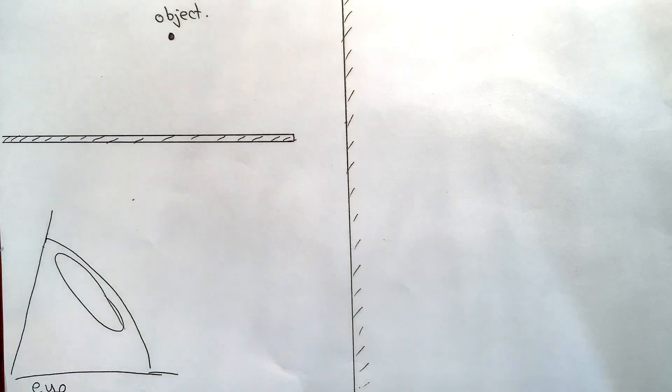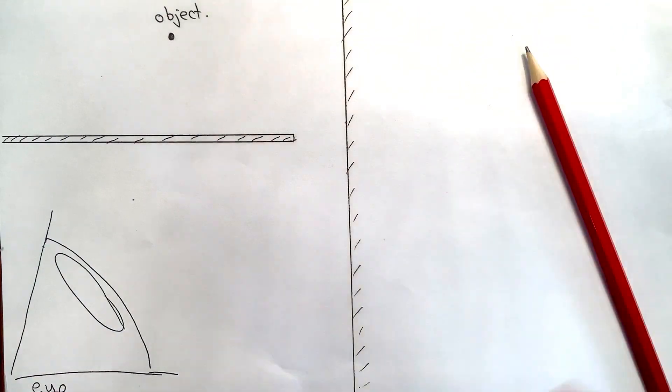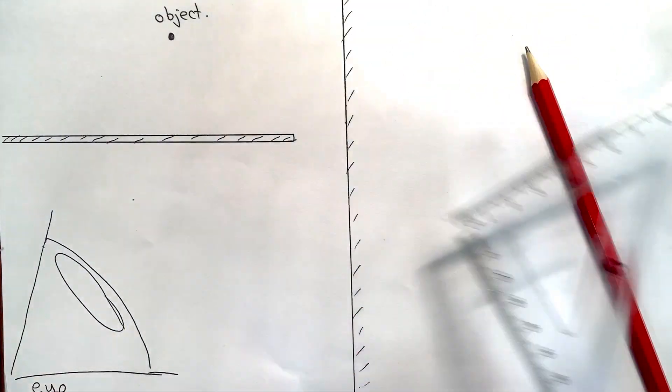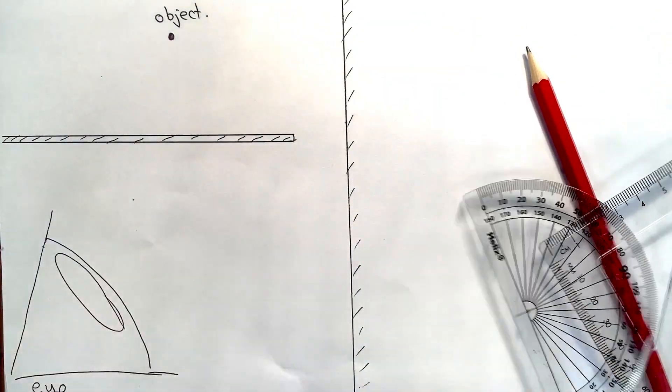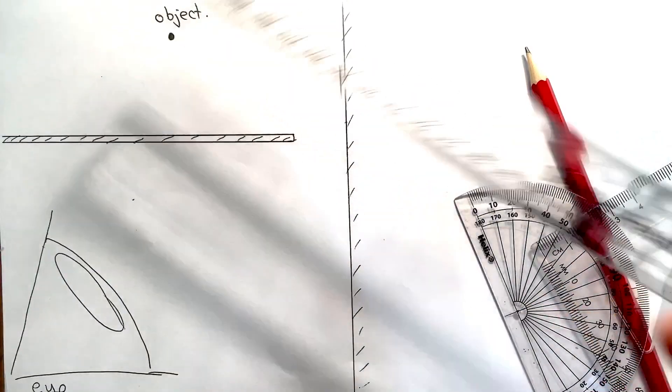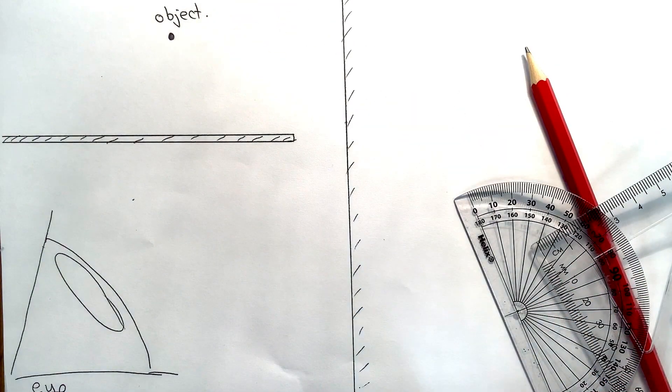For this you're going to need a pencil, a set square, a protractor, and a long ruler. So make sure you've got that equipment.